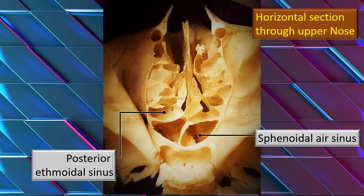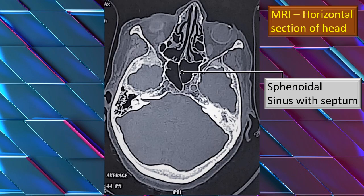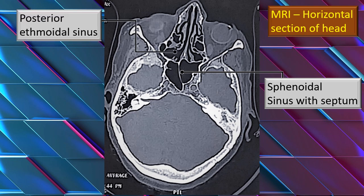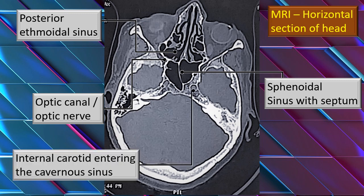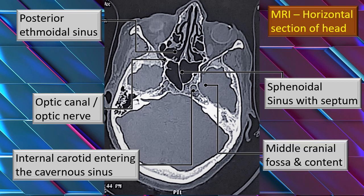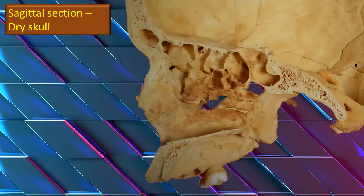Next, back to the sphenoid sinus and the posterior ethmoid sinus — let's check it out on an imaging modality. This is the sphenoid sinus with septum, and here is the posterior ethmoid sinus. The optic canal with the optic nerve — note how closely it is related to the sphenoid sinus. More lateral to the sinus is the internal carotid artery entering the cavernous sinus, which is why you are seeing it in cross section. That's the middle cranial fossa and its contents, specifically the temporal bone in this area.